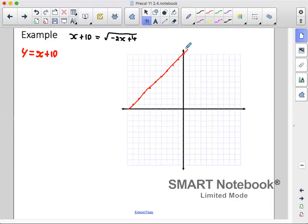Now we can see our graph looks like this. Next one, we have y equals the root of negative 2x plus 4.